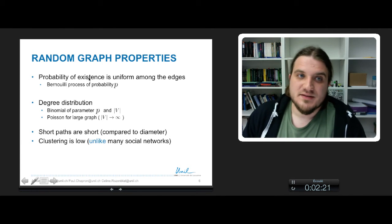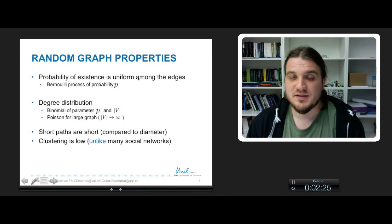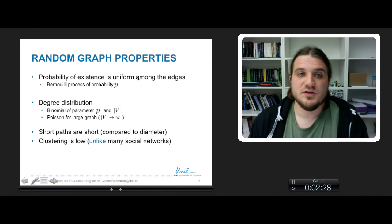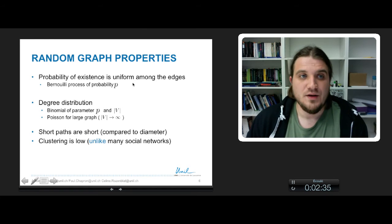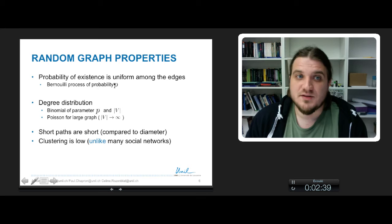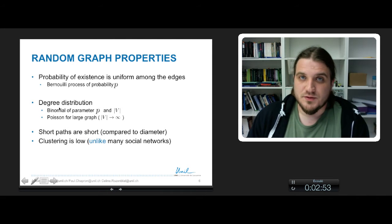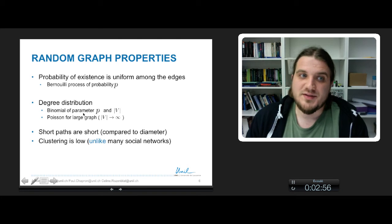The probability of existence is uniform among edges. This is a hypothesis saying that every edge has the same probability to exist. So this is a Bernoulli process of probability p. And this probability of existence leads to a degree distribution. The distribution of degrees for the nodes is binomial of parameter p and the size of the node set.